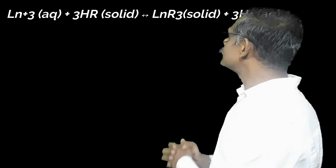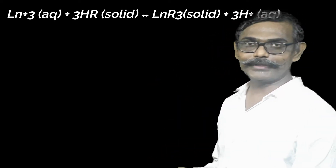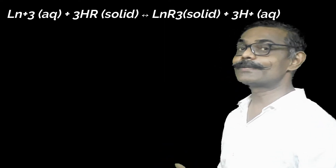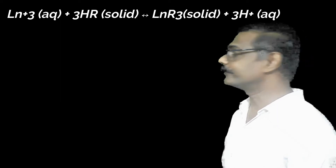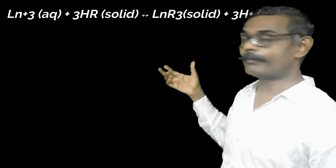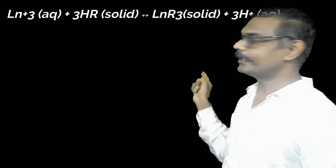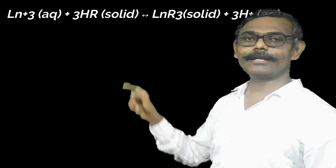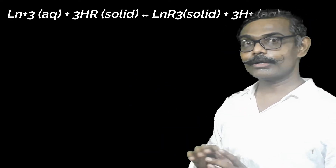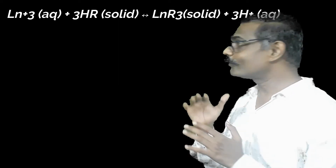This equilibrium is represented by the equation: Ln³⁺(aq) + 3HR(s) ⇌ LnR₃(s) + 3H⁺(aq), where HR represents the protonated resin in solid phase and LnR₃ represents lanthanoids in the solid resin form. So the lanthanoids are now distributed between two phases: the solid resin phase and the aqueous solution phase.